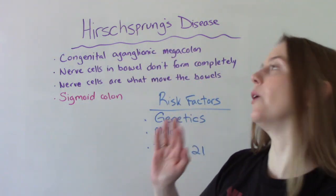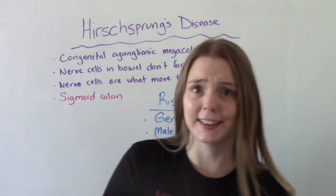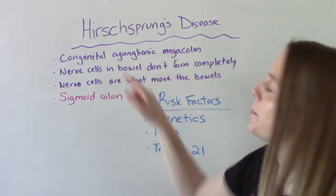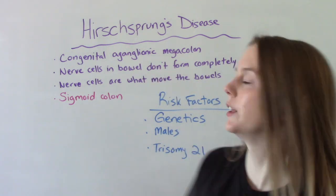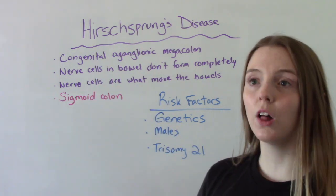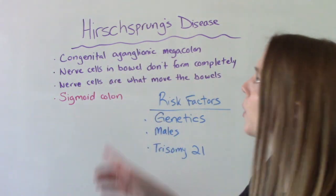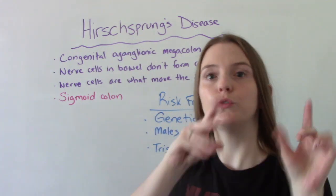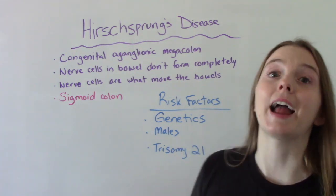This is also known as congenital aganglionic megacolon. Breaking that down: congenital meaning you're born with it, 'a' meaning the absence of, and ganglionic referring to the ganglion cells of the colon. The nerve cells in the bowel don't form at all or don't form completely. This is a big deal because nerve cells are what cause peristalsis — the contractions of the bowels that help move food and waste through. For somebody who has this, that's not happening.